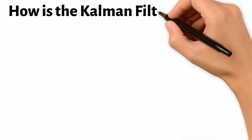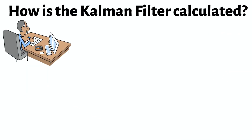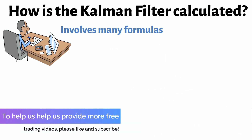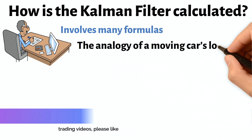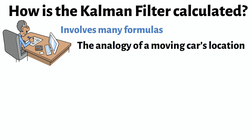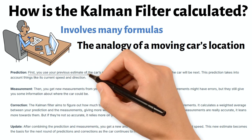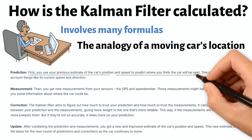Calculating the Kalman filter is a long process that involves many formulas, but we'll illustrate what it looks like using the analogy of a moving car's location. To calculate the car's location with this system, you will go through four steps. First, you use the previous estimate of the car's position and the current speed and direction to predict where you think the car will be next.